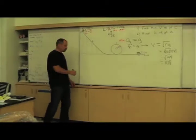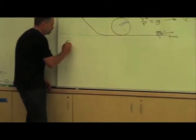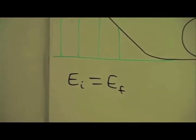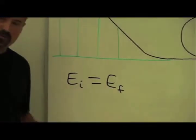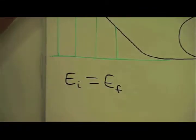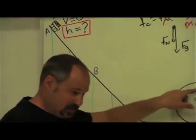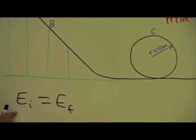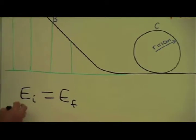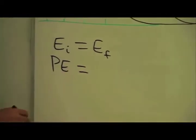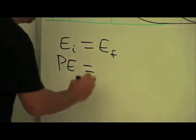So let's use energy conservation now. With energy conservation, you always start with initial energy equals final energy. In this case, the initial energy is the energy at point A, and the final energy is the energy at point C. At point A, we only have potential energy — there's no speed, so there's no kinetic energy. At point C, we're off the ground so we have potential energy, and it's also moving, so we also have kinetic energy.